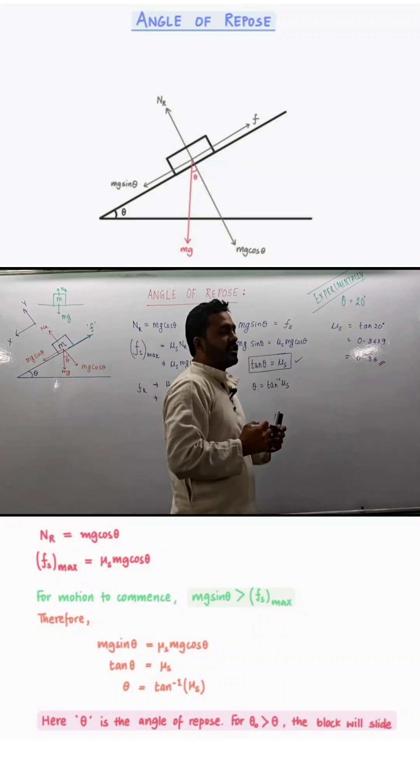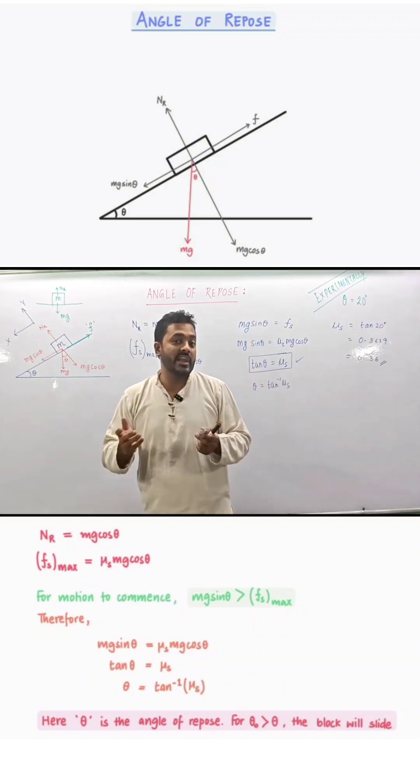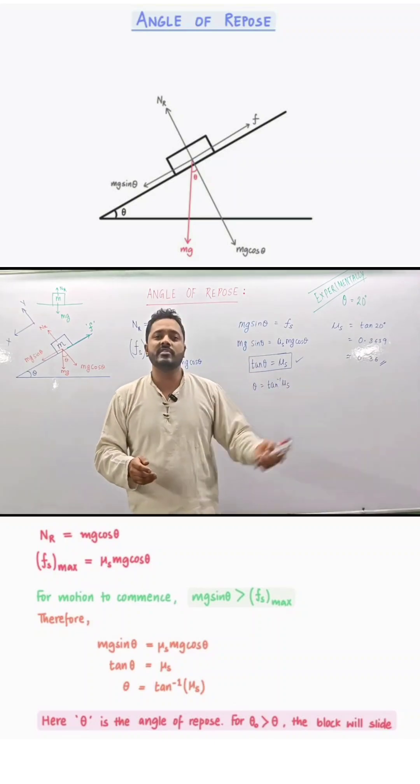The coefficient of friction between the wooden block and the glass surface is 0.36.